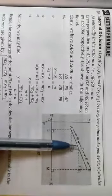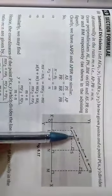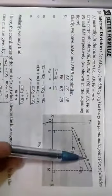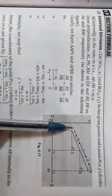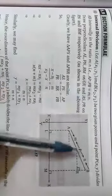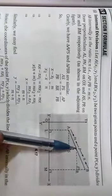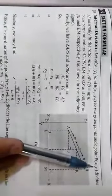In internal division, the division ratio is m:n. The coordinates of A are (x₁, y₁) and B are (x₂, y₂). The coordinates of P, which we are going to find, are (x, y).